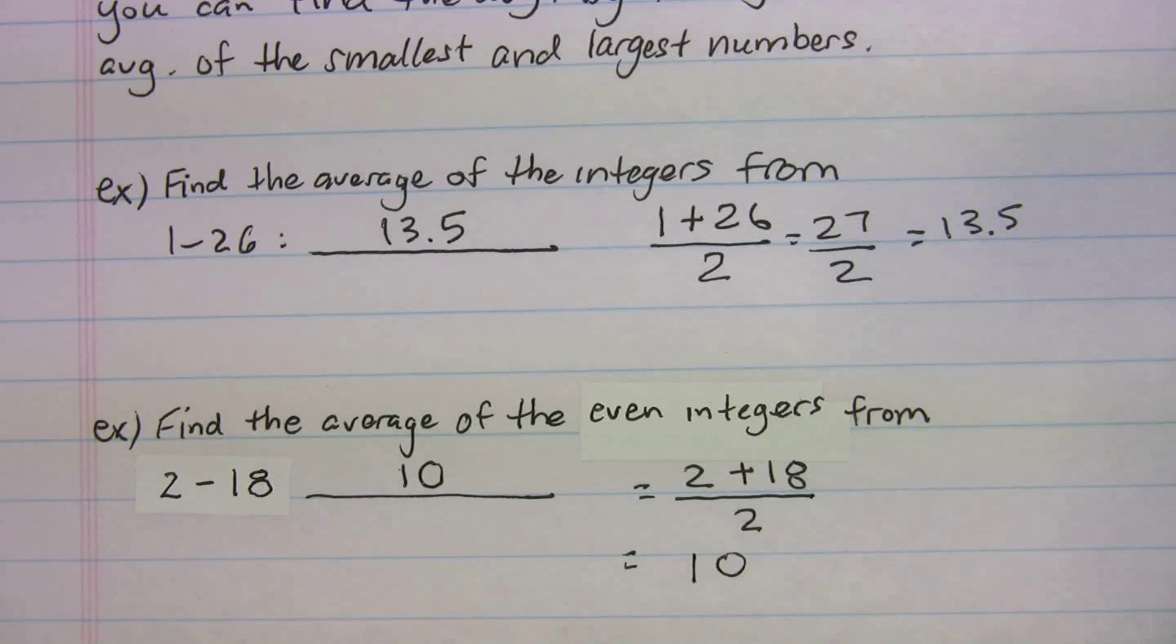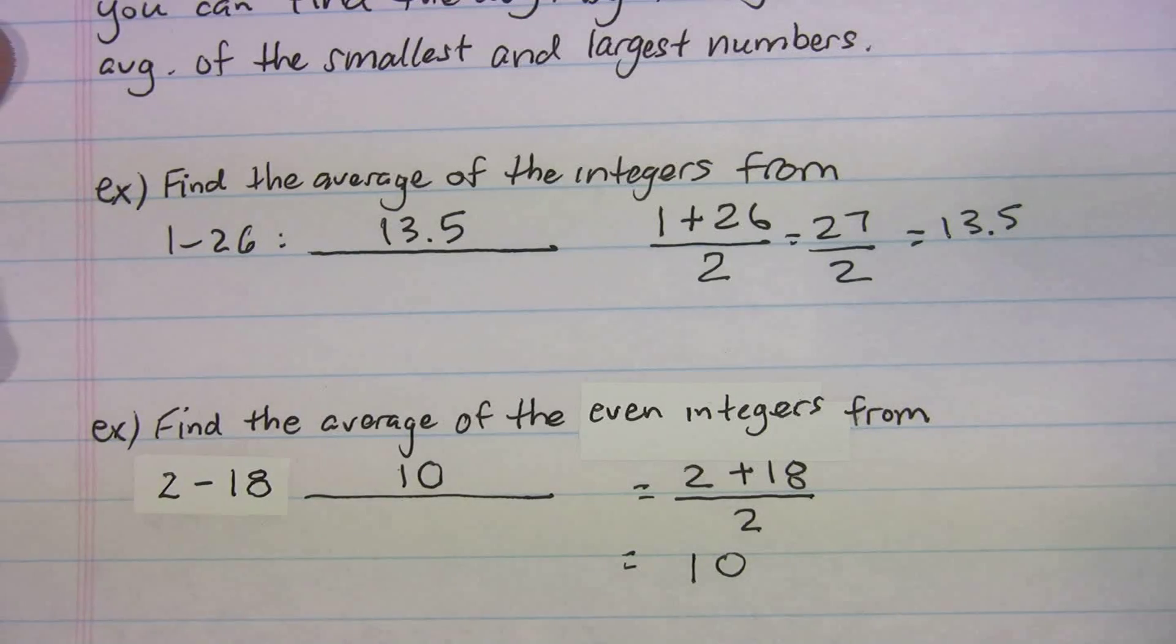So your average would be 10. And you can check it on the calculator. It's going to work. So this is a nice little shortcut. The chances of you getting this on the SAT are probably slim if you got something like this, but it's always good to know.